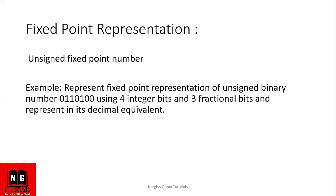Here we have taken an example: represent using four integer bits and three fractional bits, and find the decimal equivalent. We have to represent the given number in fixed point notation with four integer bits and three fractional bits, then convert it to its decimal equivalent.